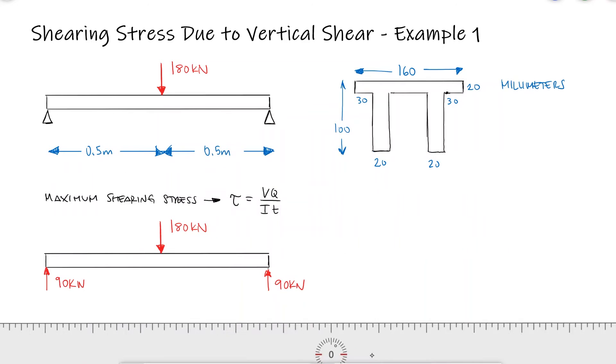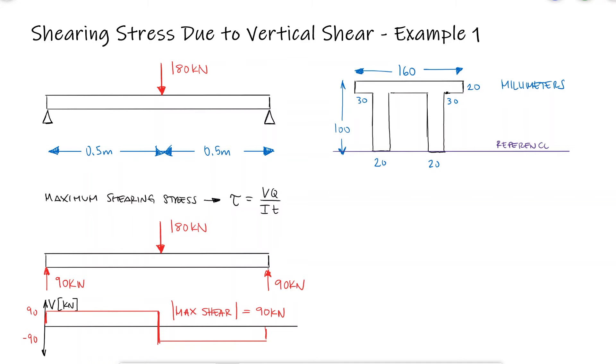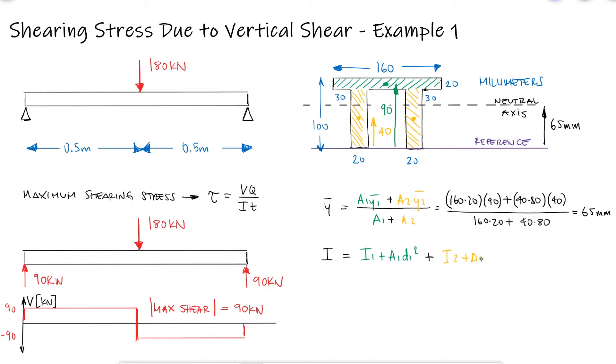From a free body diagram, we know that the shear force V equals 90 kN. For the second moment of area I, we need to find the neutral axis and use the parallel axis theorem. Knowing that the distance from the neutral axis to the centroid of the green rectangle is 25, and the distance to the centroid of the yellow rectangles is -25, we find our second moment of area.